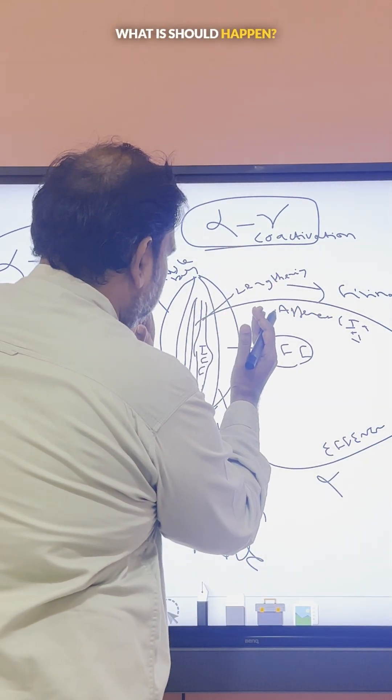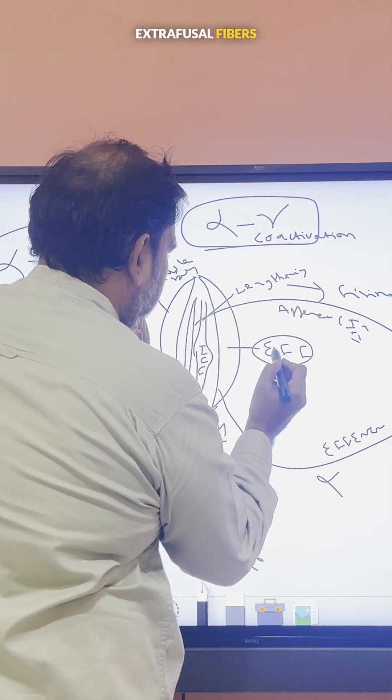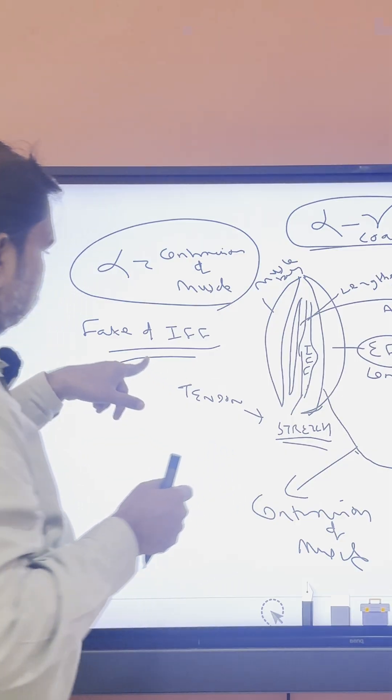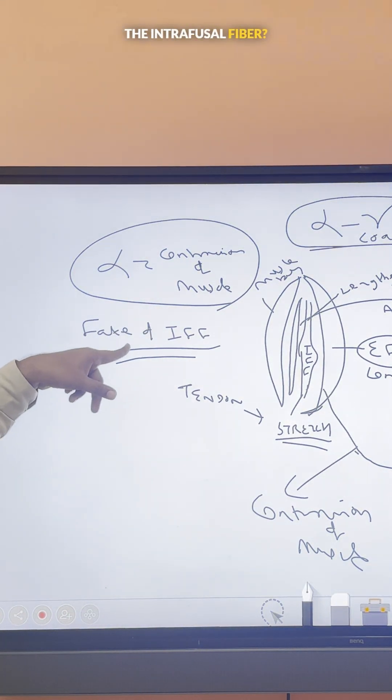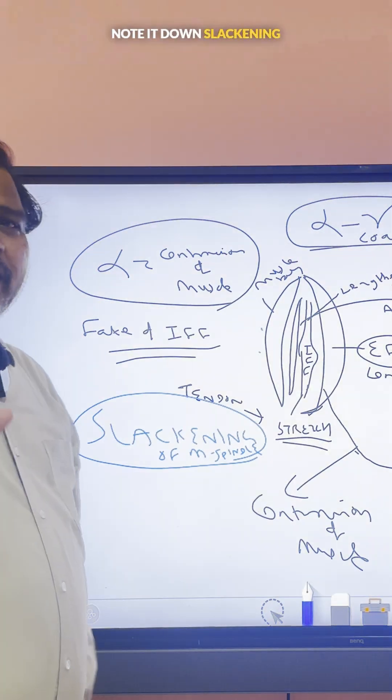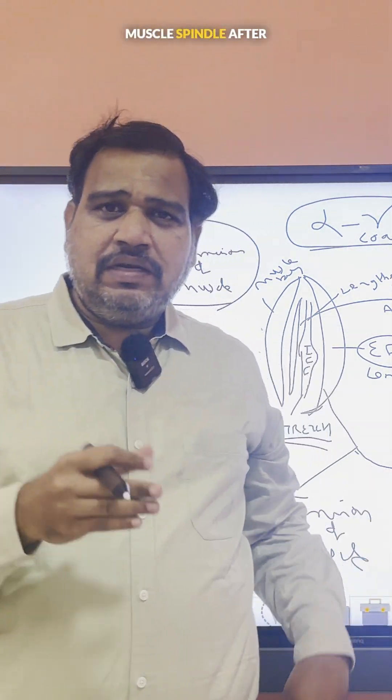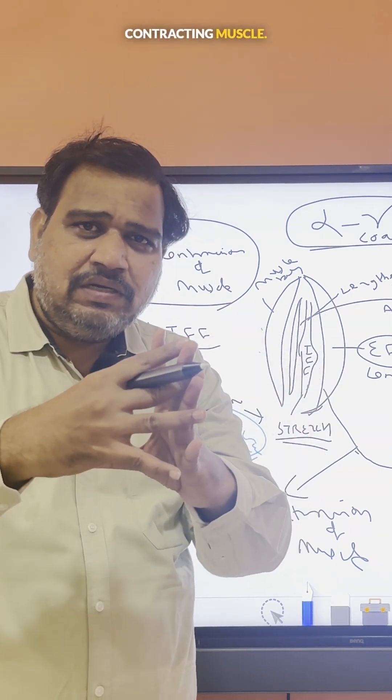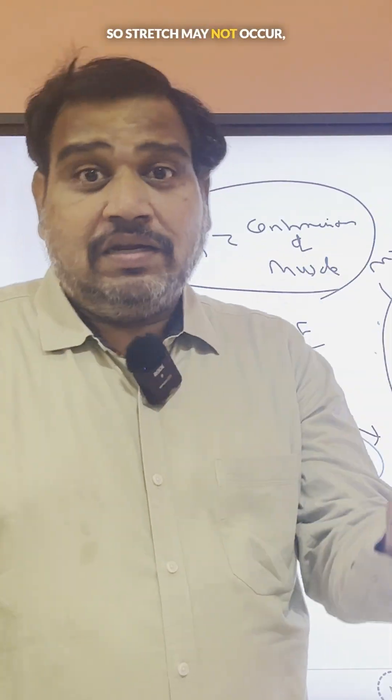Now just to concentrate, what should happen? This will contract - extrafusal fibers are compressing. Now what happens to the intrafusal fiber? We call this condition slackening. Note it - slackening of the muscle spindle means the muscle spindle, after the contraction of the muscle, is caught between the contracting muscle, so stretch may not occur.